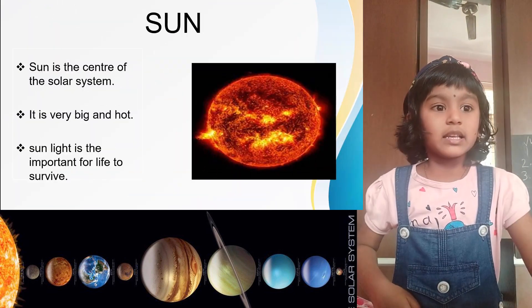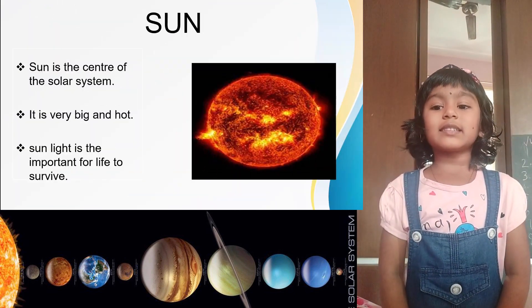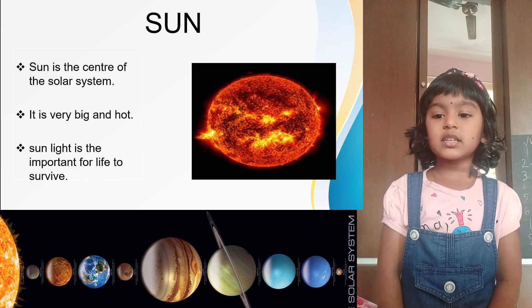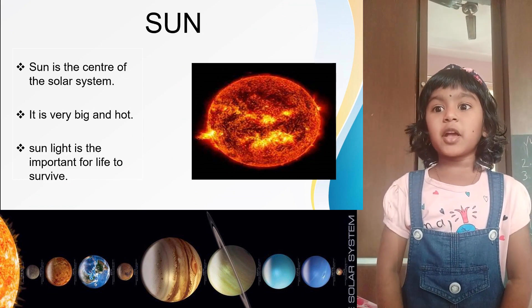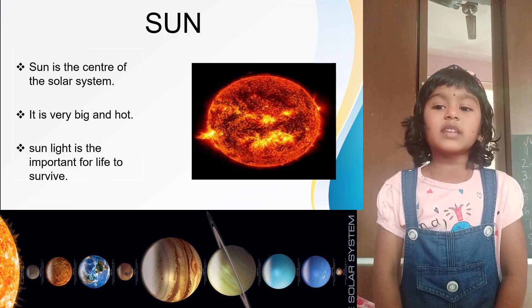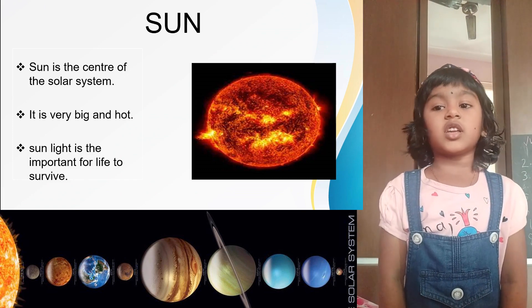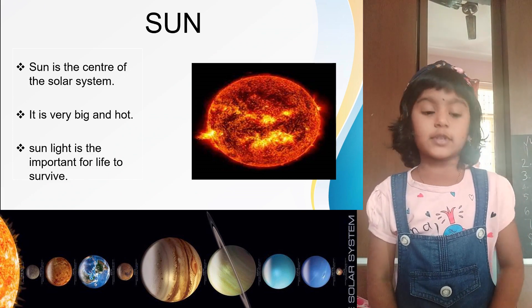Sun. Sun is the center of the solar system. It is big and hot. Sunlight is most important for life to survive.